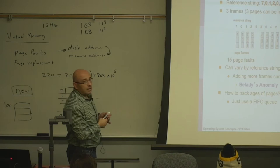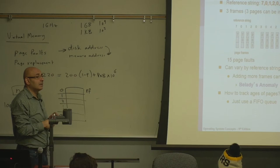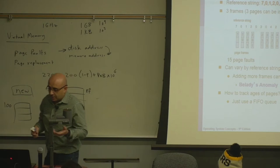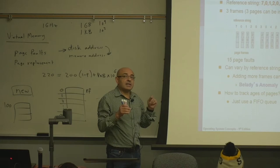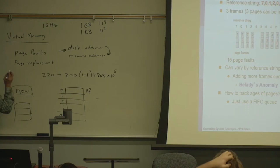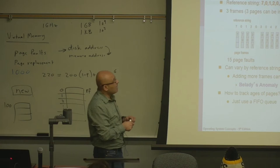Question: if your physical memory was as big as the demand — the total sum of the sizes of the logical address spaces of the processes — would that eliminate page faults? Yes. For example, if you have three processes each needing 1,000 frames and you have 3,000 frames, there will be no replacement. So let's look into First-In, First-Out.